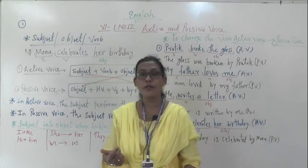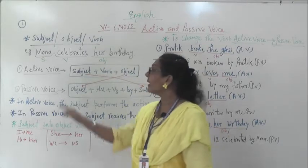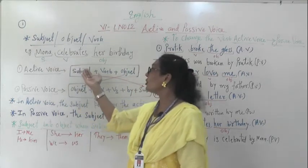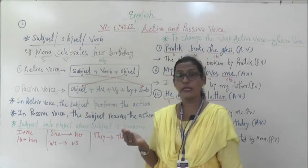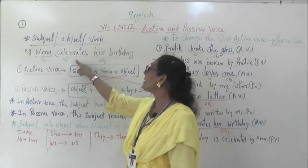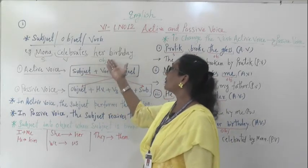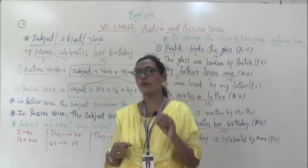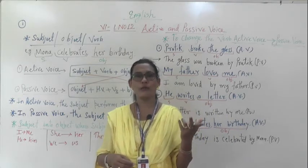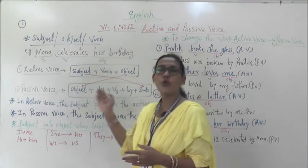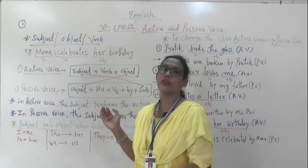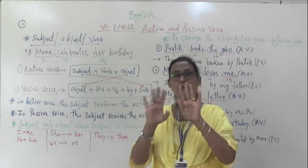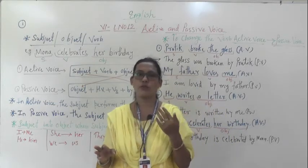In 'Mona celebrates her birthday,' which is the subject? Which is the naming word? Yes, Mona is the naming word, so Mona is the subject. What is the action word? She celebrates — so 'celebrates' is the verb. The other part, 'her birthday,' is the object. Once you can find out which is subject, object, and verb, it is very easy to do all these things.